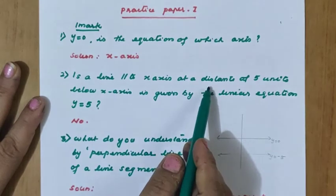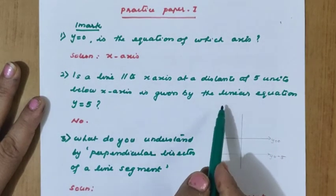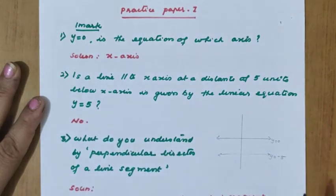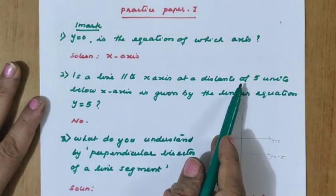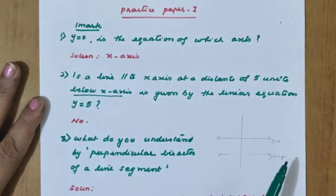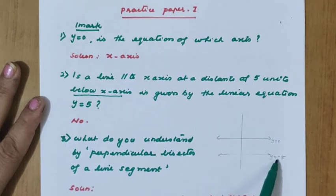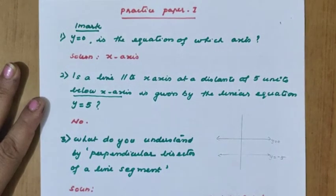Is a line parallel to x-axis at a distance of 5 units below x-axis given by the linear equation y equal to 5? It is a yes or no question only. Y equal to 5 is not possible because it is below x-axis. Below x-axis means it should be negative. So it is y equal to minus 5 that is correct. Y equal to 5 is wrong. So we should write no.